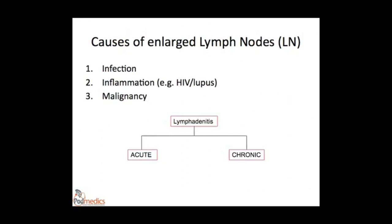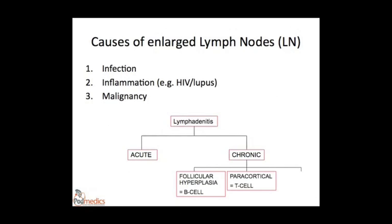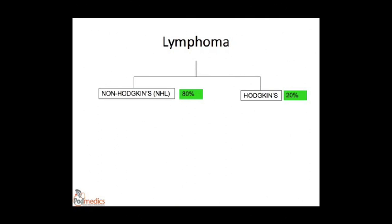We can divide lymphadenitis into acute nonspecific lymphadenitis, with large nodes and prominent germinal centres, usually caused by infection and the reactive inflammatory changes that result. Or it can be chronic nonspecific lymphadenitis, which is divided into follicular hyperplasia due to prominent B cell activation — the most common cause being HIV — and paracortical hyperplasia with reactive changes in the T-zone, most commonly caused by viral infections. The last type is granulomatous lymphadenitis, for example with tuberculosis.